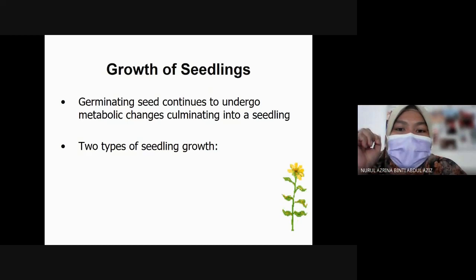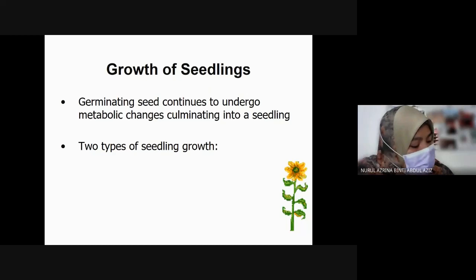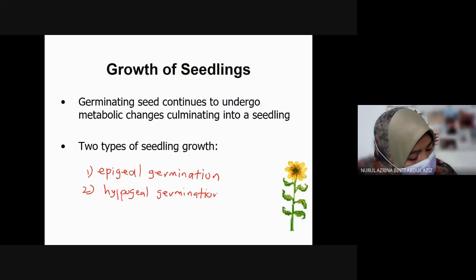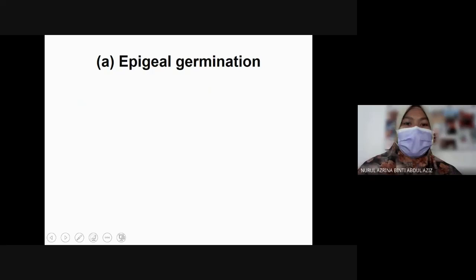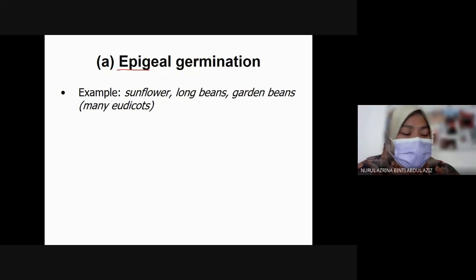There are two types of seedling growth: epigeal germination and hypogeal germination. Epigeal germination is usually found in many dicots like sunflower, long beans, and garden beans — most dicots undergo epigeal germination.